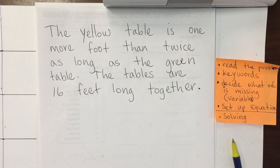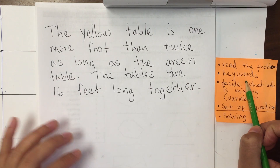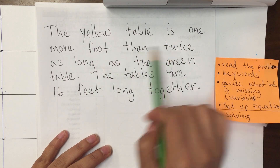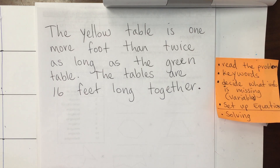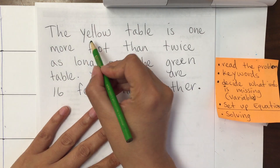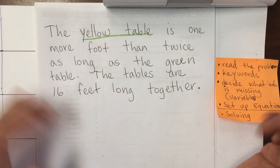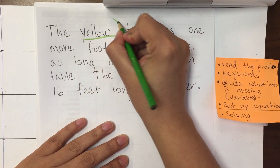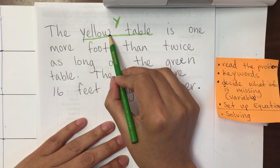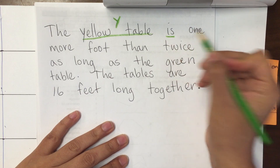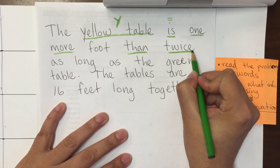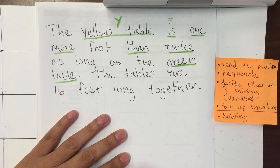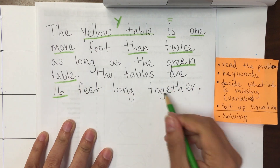If you need more time you can always pause or rewind. Read the problem: 'The yellow table is one more foot than twice as long as the green table. The tables are 16 feet long together.' When my students saw this they said it looked too long, but once we got to it they said it's not as bad — it looks worse than it really is. Keywords: yellow table — it's a measurement. 'Is' — equals sign. 'One more foot than.' 'Twice as long as the green table.' The tables are 16 feet long together.